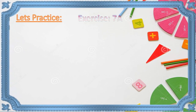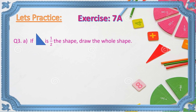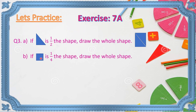Let's practice exercise 7a, question three. If this triangle is half the shape, draw the whole shape. We need to draw one more triangle to get the full shape. Yes — one triangle is given; we need one more, and we get the full shape. Next: if this square is one-fourth of the shape, draw the whole shape. If it is one-fourth, we need three more squares. We got it — this is the whole shape. Quite easy, isn't it, children?